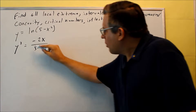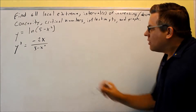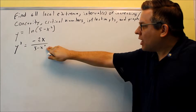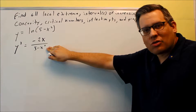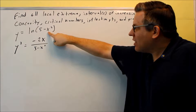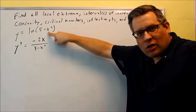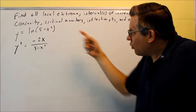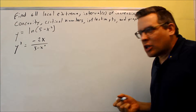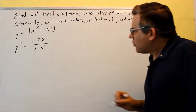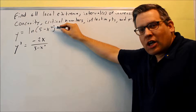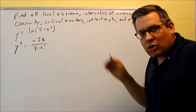Now we have to look at what numbers are going to make the derivative undefined — that's where you're going to be dividing by 0. If we set the bottom equal to 0, we're going to get plus or minus root 5. But if I take root 5 and put it back into the original, I'm going to get ln of 0, which means it's not defined on the original function either. So I'm not going to find any critical numbers from setting the bottom equal to 0.